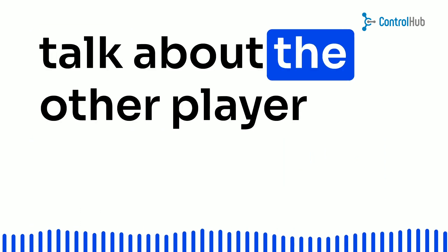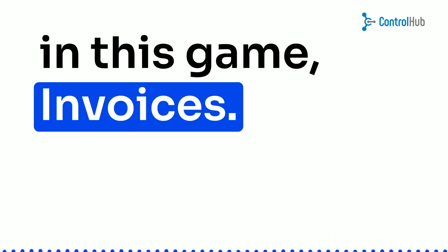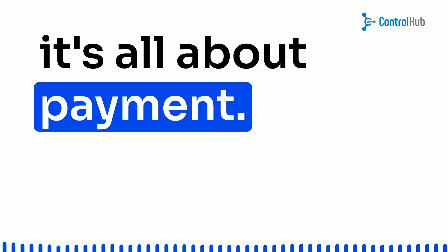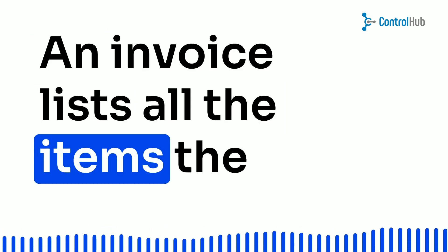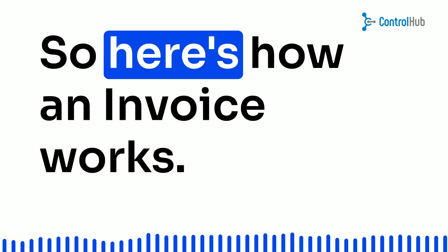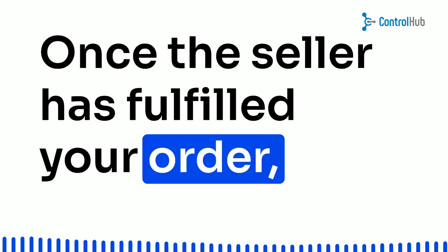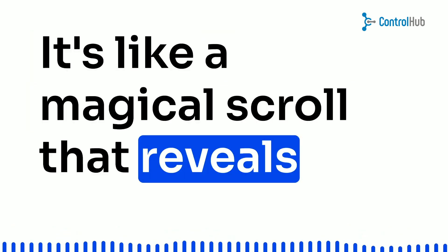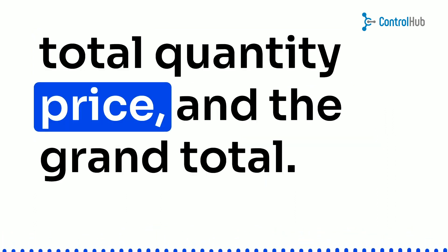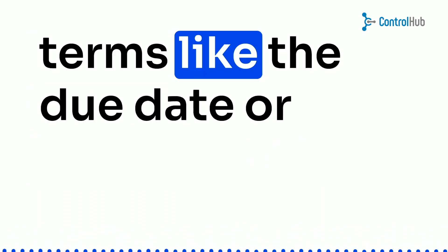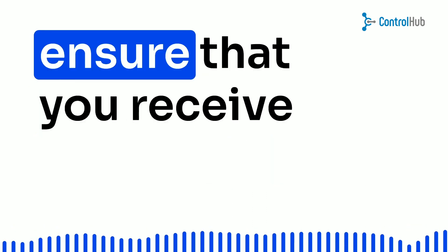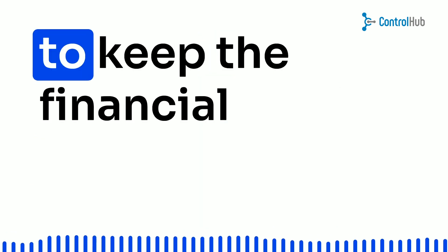Now let's talk about the other player in this game: invoices. Think of an invoice as the grand finale of your purchasing journey. It's created by the seller, not you, and it's all about payment. An invoice lists all the items the seller provided and requests payment for those items. Once the seller has fulfilled your order, they create an invoice revealing the number and identity of each item purchased, along with the price per item, total quantity price, and the grand total. They also establish payment terms like the due date or installment schedule, then send you this invoice, tracking it to ensure you receive and honor the payment.